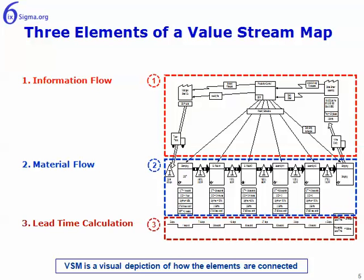In the material, we saw three distinct components to the value stream map. The first is the information flow — that's the top third of the value stream map. In the center third, there's the material flow, otherwise known as fulfillment. And in the bottom third, there's the lead time calculation or the lead time ladder. Let's look at each of these now individually.